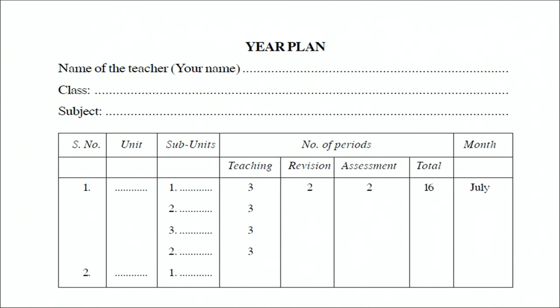What you see here on screen is the format of the annual plan prescribed in the NIOS course book. Have a look at this tabular format: you have units, subunits, and then the number of periods dedicated for different activities like teaching, revision and assessment, the total number of periods, and the month. The annual plan focuses on the unit, the subunits within it, and the number of periods required for teaching, revision and assessment.